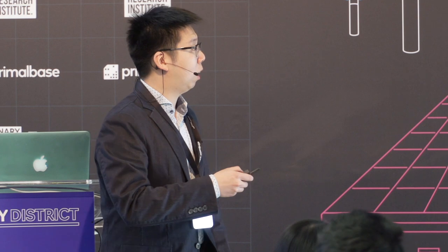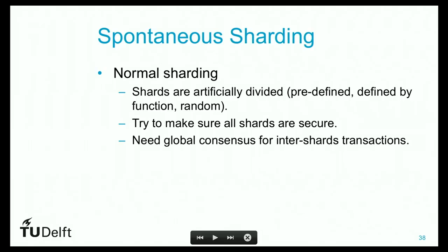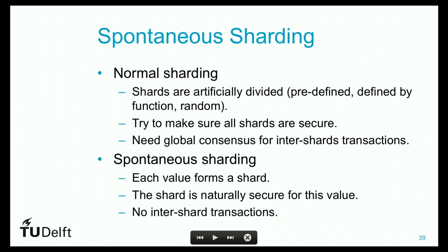Comparing to normal sharding: in normal sharding, we artificially divide shards either randomly or predefined, ensure all shards are secure, and need additional mechanisms to keep inter-shard transactions secure. In our system, each value spontaneously forms a shard. The shard is naturally secure because all nodes validate it when they receive the value. And there will be no inter-shard transactions because transacting inter-shard just means that node comes into the shard.